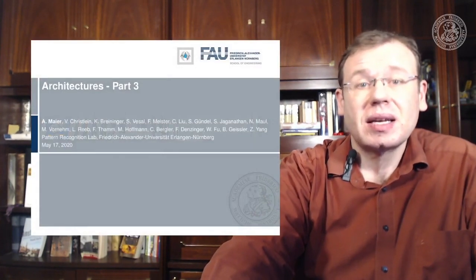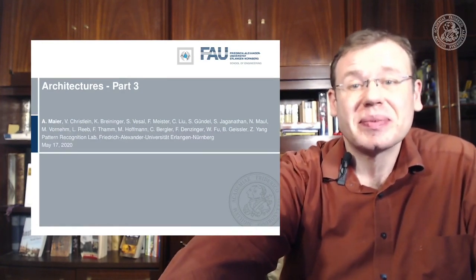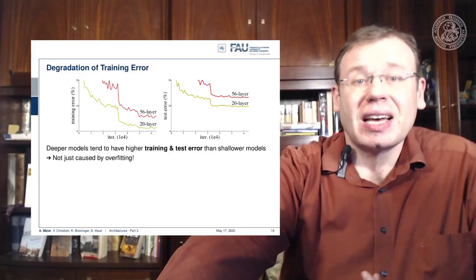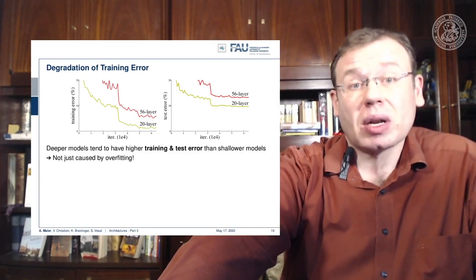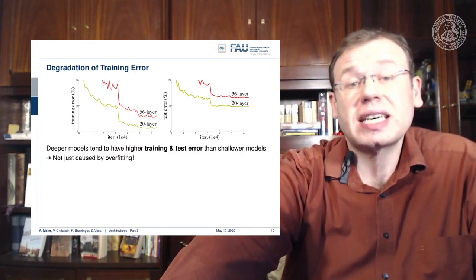Welcome back to deep learning. Today we want to discuss architectures, in particular the really deep ones. We are really going towards deep learning. Instead of what humans might need — just dozens of examples — these things will need millions. If you want to train deeper models with all the things we've seen so far, you see that we go into a certain kind of saturation.